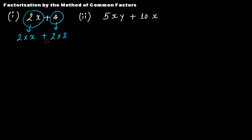Now each term has been written in its irreducible factor form. The first term has one 2 and the second term has one 2, so these two terms have one 2 in common. Using the method of common factors, 2 is a factor of 2x and also a factor of 4. So we take 2 common, giving us 2(x + 2).